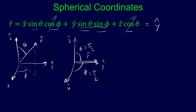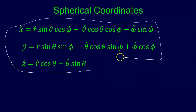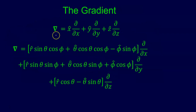Once we have r-hat, theta-hat, and phi-hat in terms of x, y, and z, we can also invert that and set up x, y, and z in terms of r, theta, and phi. Once we have these, we can go back to our definition of the gradient. Here's the gradient in Cartesian coordinates, and we want to show how we get the gradient in spherical coordinates. So I'm going to take these equations we just found and plug them in.